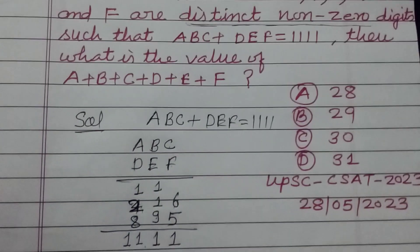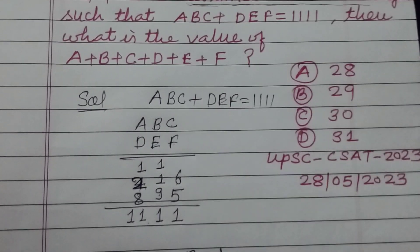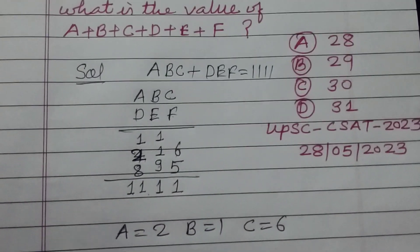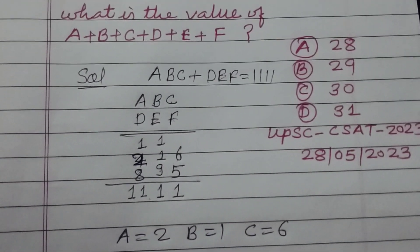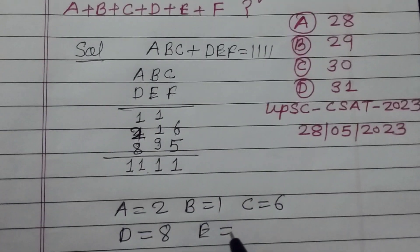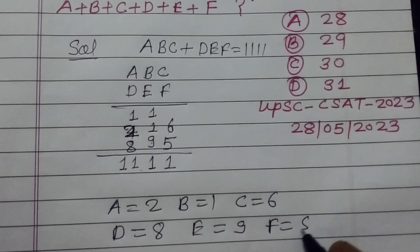So here ABCD are: A is 2, B is 1, C is 6, and D is 8. E is 9 and F is 5.